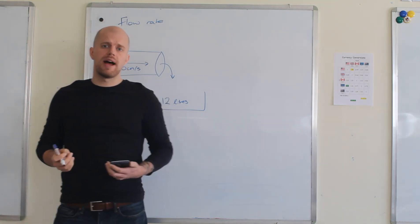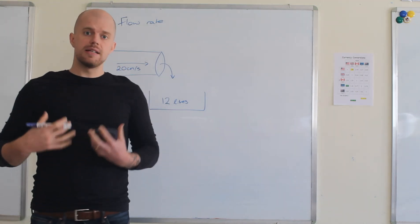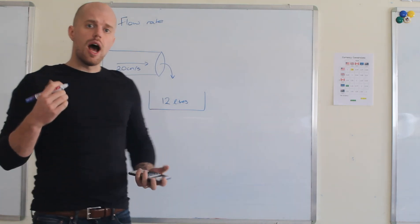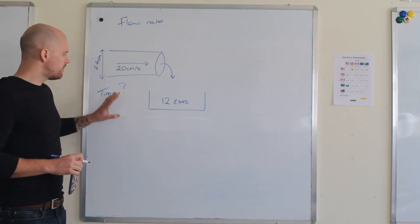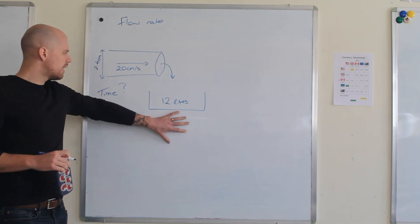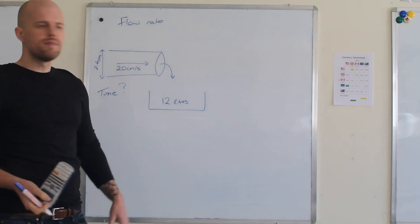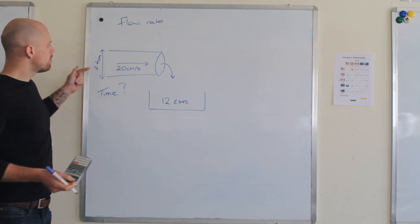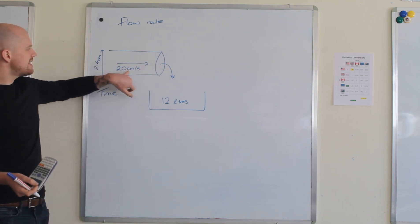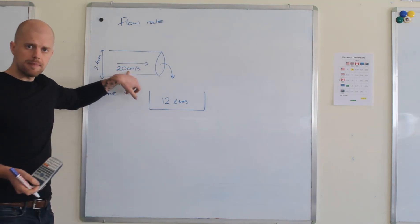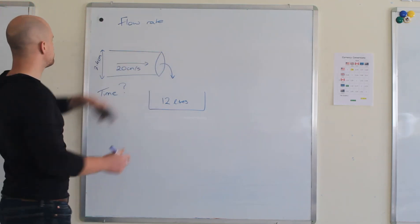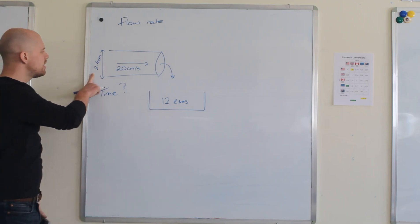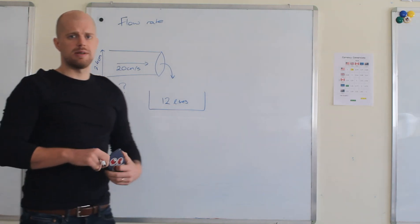Today we're going to be looking at flow rates. We're going to take a typical GCSE question and we're going to be looking at how long it takes to fill up a container that holds 12 liters of water if water's flowing through a pipe at 20 centimeters per second. Now the pipe is a circular pipe, I can't draw very well, it is a circular pipe and the diameter is 2.4 centimeters.